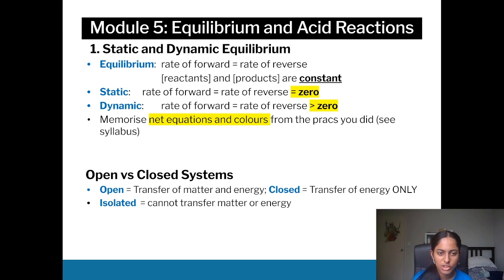So we know that equilibrium is pretty much where the rate of the forward is the rate of the reverse reactions and the concentrations are constant. For static equilibrium, the rate of forward and rate of reverse is zero, but in dynamic it's greater than zero. Just make sure you memorize this and also memorize any relevant colors that you get from the pracs that you've done in school.